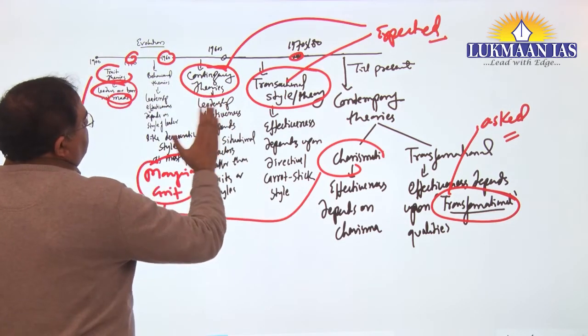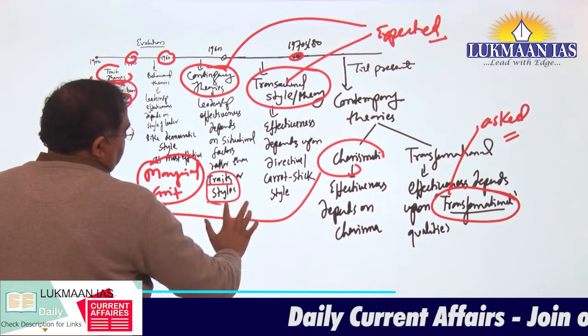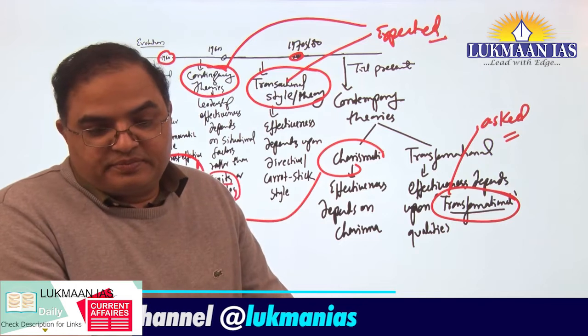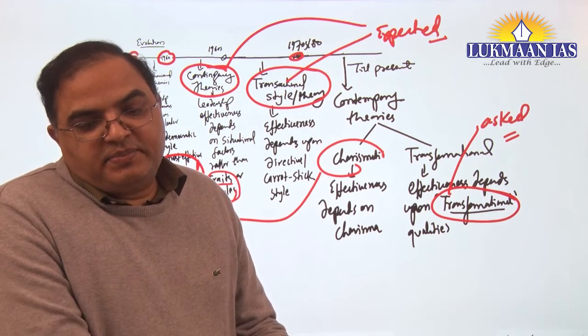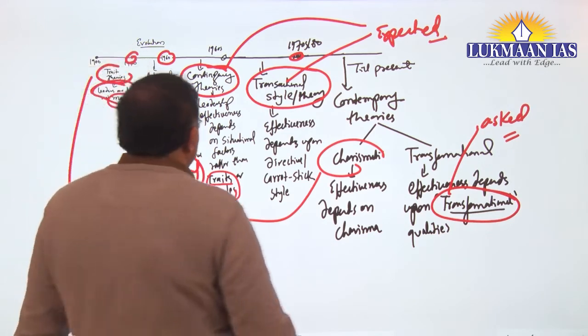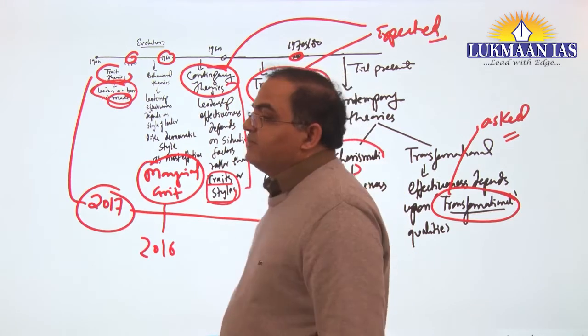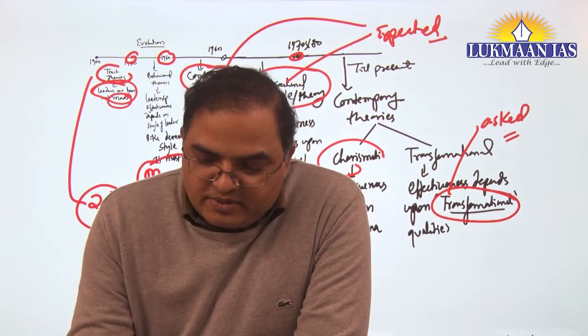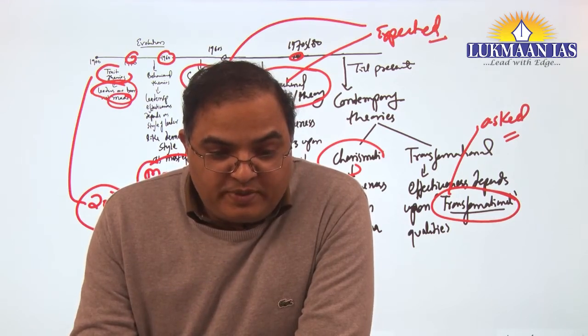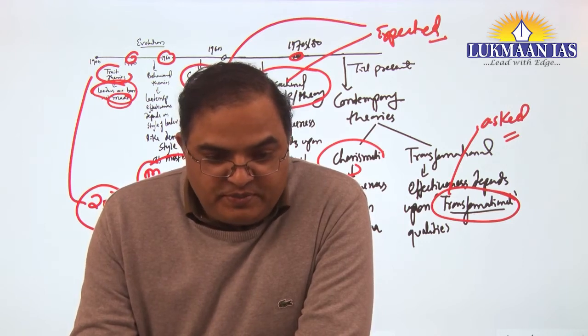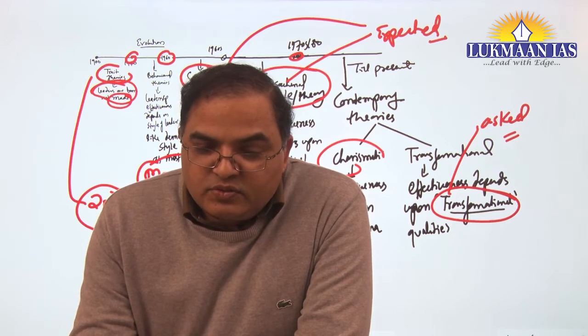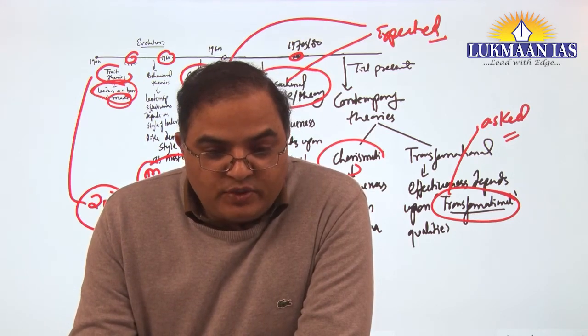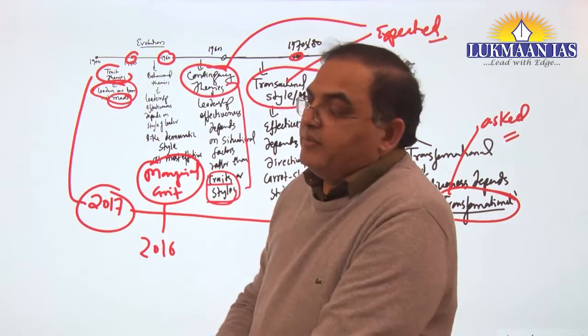But then contingency theory comes, it says no, traits and styles can play their role, but the most important role is played by situation. Whether a leader is able to deal with a particular situation. And this situation will decide the effectiveness - contingency factor, farm protest and leadership. So this farm protest has also tested the leadership of Prime Minister, leadership of police commissioner. So police commissioner can be a very effective leader in normal times, but how in a particular situation, how he deals effectively.